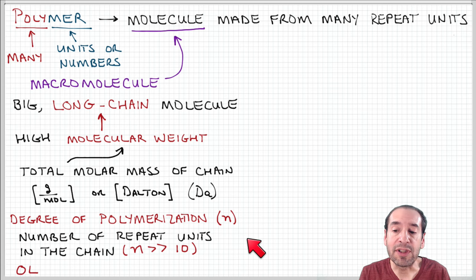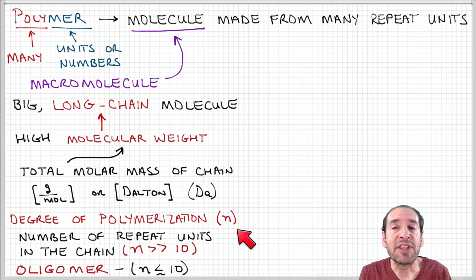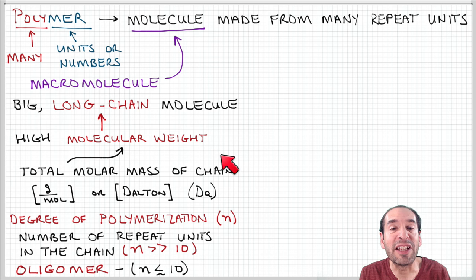And that's called the degree of polymerization, often abbreviated by this lowercase n. The degree of polymerization is just representative of the number of repeat units of the chain. So some really long polymers can have molecular weights in the hundred thousands or even millions, and degrees of polymerization in the thousands or the ten thousands or more.